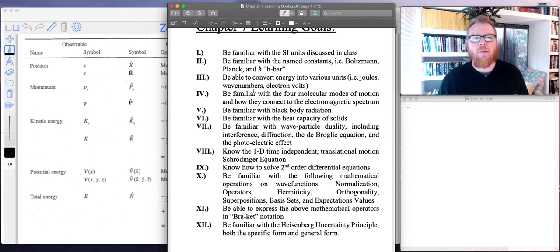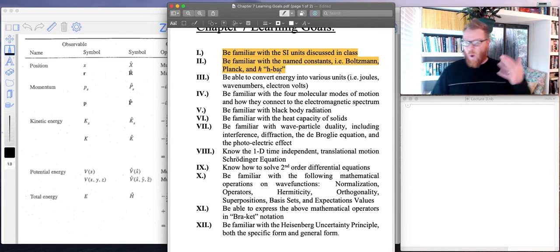Let's see here, my highlighter. Okay, be familiar with the SI units discussed in class—yep, that was part of our review. Be familiar with the named constants: Boltzmann, Planck, and h-bar, which is h divided by 2π. In this lecture today, you're going to see why we use this h-bar constant.